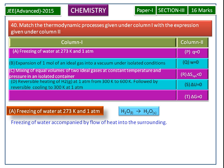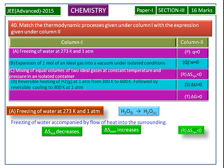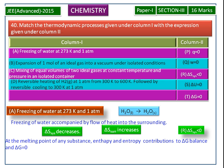The change in entropy of the system decreases, and the change in entropy of the surrounding increases. In the given option, the R term is correct, so delta S of the system is less than 0. At the melting point of any substance, the enthalpy and entropy contributions to delta G are balanced and delta G is equal to 0.